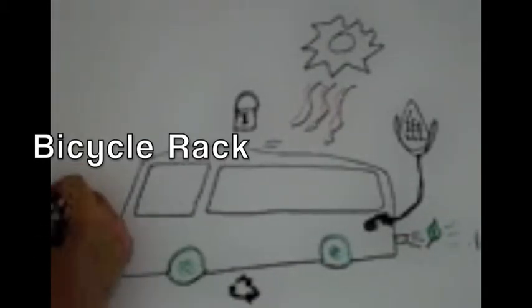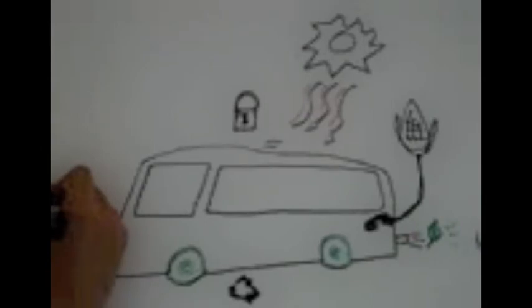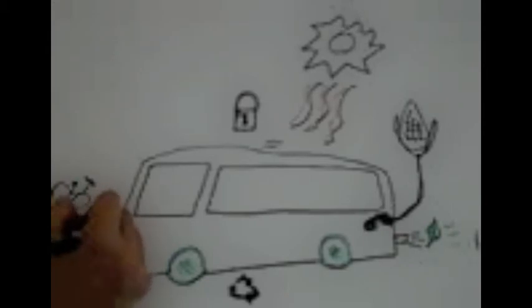In addition, a bicycle rack is installed on the bus. This allows travelers to get to the bus stop riding their bikes and taking them to their final destination. The rack also facilitates and promotes the use of bicycles as an alternative to cars.